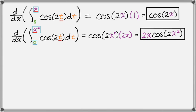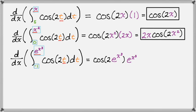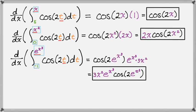Two more examples. We want the derivative with respect to x of the integral from negative 1 to e to the x cubed of cosine of 2t dt. First check: the lower bound is a constant — it's negative 1. We look at the upper bound: it's e to the x cubed. We replace every t in the integrand with e to the x cubed, giving cosine of 2 times e to the x cubed. Then we multiply by the derivative of e to the x cubed, which is e to the x cubed times 3x squared. The final answer is 3x squared times e to the x cubed times cosine of 2 e to the x cubed.